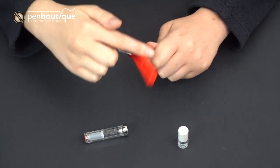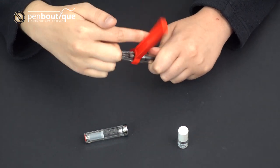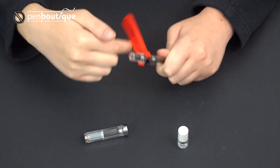You want to twist it clockwise and that's going to take out the entire piston mechanism with the end cap.